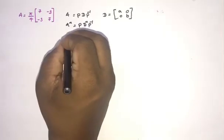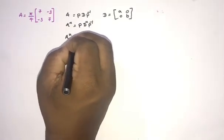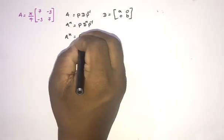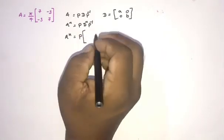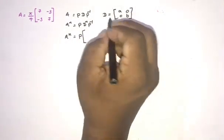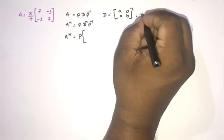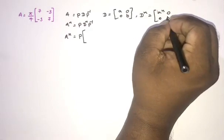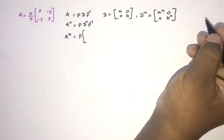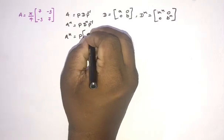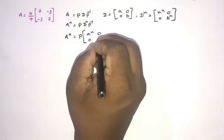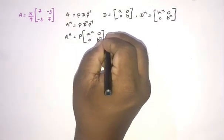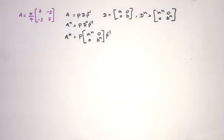So we can write A^n = P D^n P⁻¹. We know D^n equals the diagonal matrix with entries a^n and b^n. Therefore A^n = P [[a^n, 0], [0, b^n]] P⁻¹.